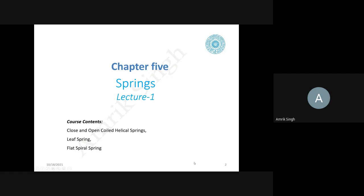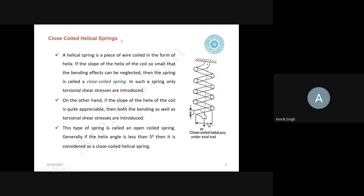First of all, a helical spring. There are closed coil helical springs and open coil helical springs. A helical spring is a piece of wire which is coiled in the form of a helix. If the slope of the helix of the coil is small, so that the bending effects can be neglected, then the spring is called the closed coil helical spring.